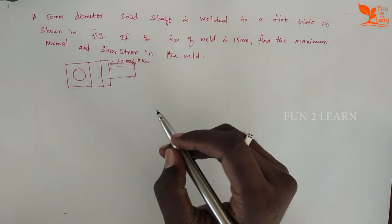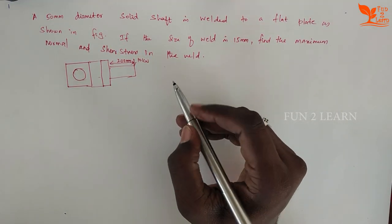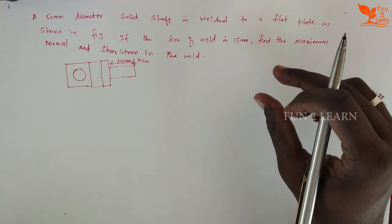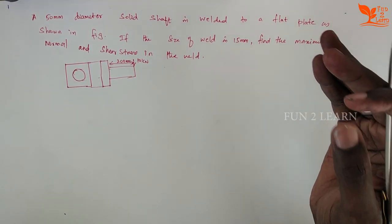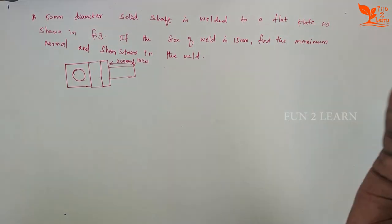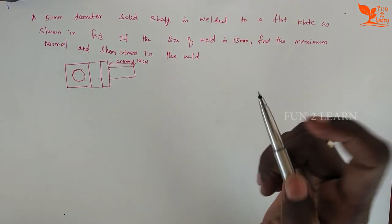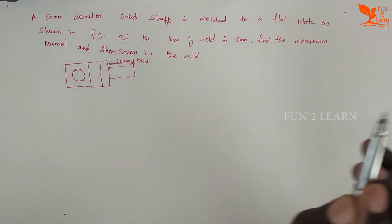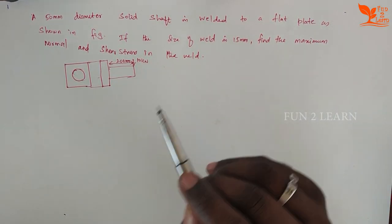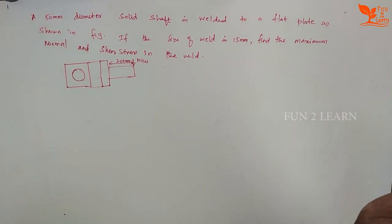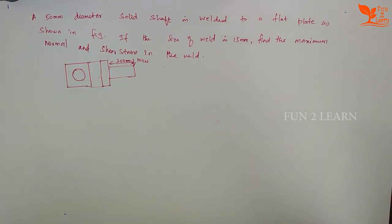Hi, today we have a problem with welded joints. We already have the types of welded joints covered. Now we have a new example: a 50mm diameter rod is welded to a flat plate. The size of the weld is 15mm. Find the maximum normal and shear stresses in the weld.